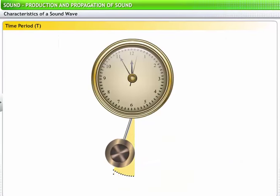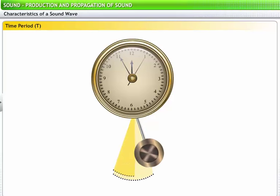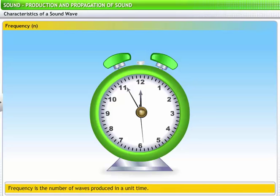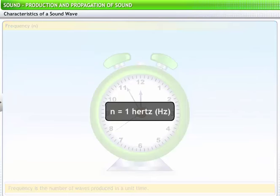For example, the time taken by a pendulum to complete one cycle is known as its time period. All of us have heard a clock tick. It ticks once every second and maintains the time period. The ticking of a clock once every second is the frequency of the clock. Frequency of sound is the number of waves produced in unit time. It is denoted by the letter N and is measured in hertz. Since the clock ticks once per second, its frequency is 1 hertz.